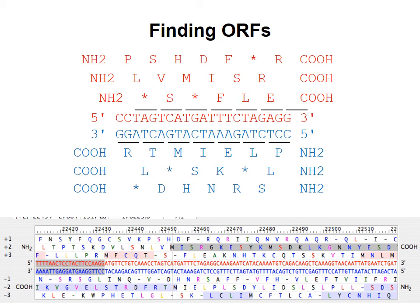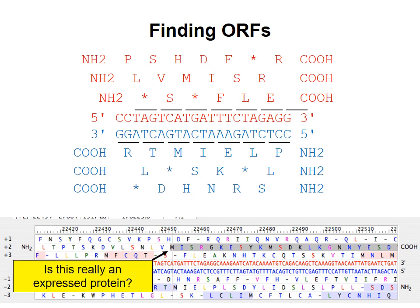We know that just about all protein-encoding regions start with an ATG codon. So when looking for open reading frames that result in an expressed protein, the first thing to do is look for all the ATG triplets in the genome. But not every ATG is the start codon for a protein, so for any of these possible open reading frames, we have to try to figure out whether it actually encodes a protein. I'll describe some strategies for how to do this in the next video.